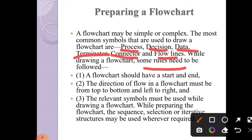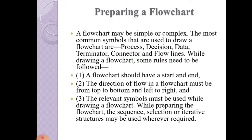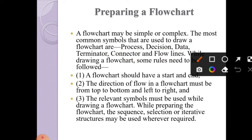The rules for drawing a flowchart are: first, a flowchart should have a start and an end — just like in an algorithm, where the first step is start and the last step is stop. Second, the direction of flow in the flowchart must be top to bottom. Third, the relevant symbols must be used while drawing a flowchart, since flowchart symbols are predefined.